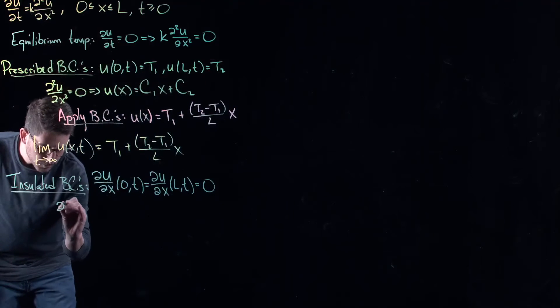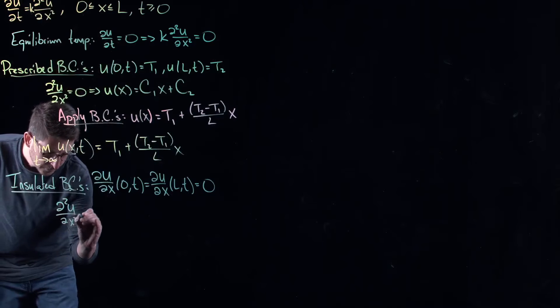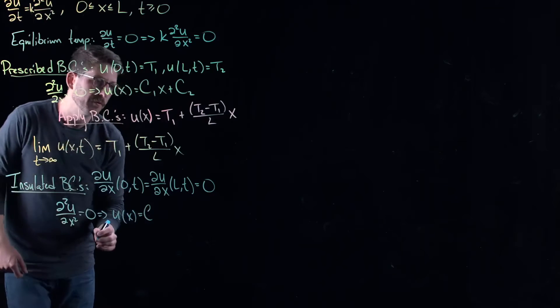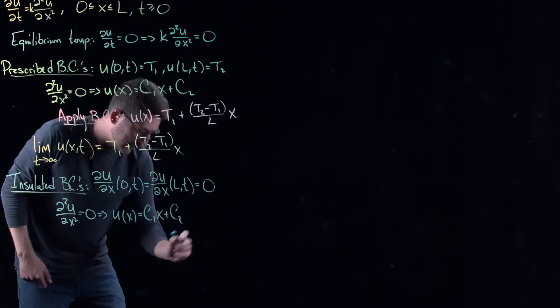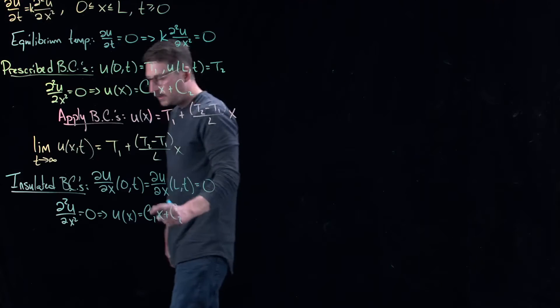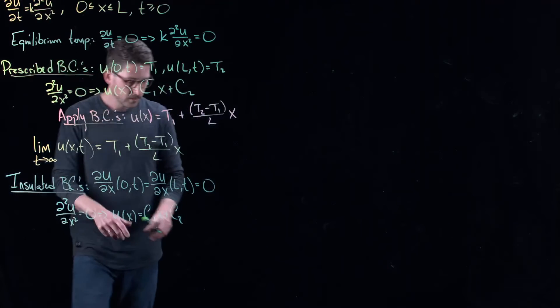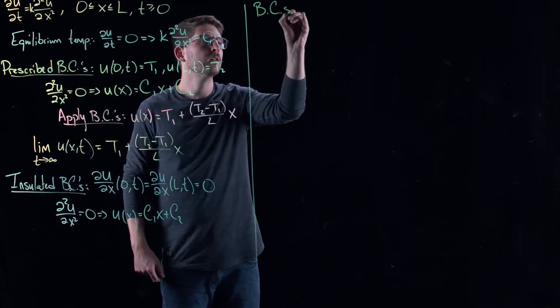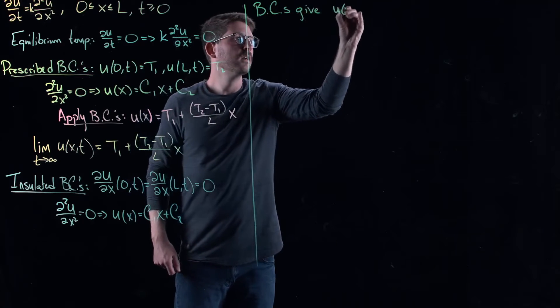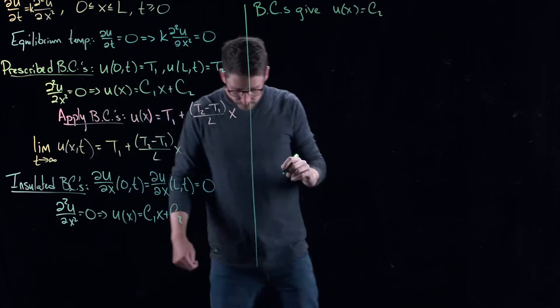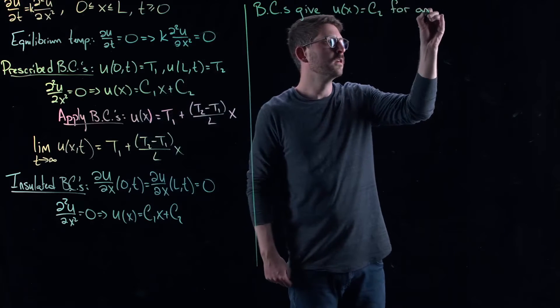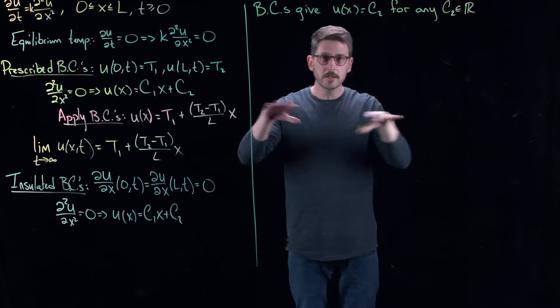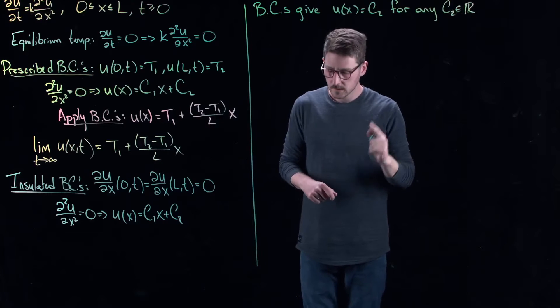Okay, so now I can solve my partial differential equation again. So again, I get the exact same thing that I had before. What was it? C1x plus C2. That's not that interesting. The only interesting thing is that C1 and C2 are determined by my boundary conditions. But now, my boundary conditions, they give infinitely many equilibrium solutions. There's a different equilibrium solution for each constant value across the rod.